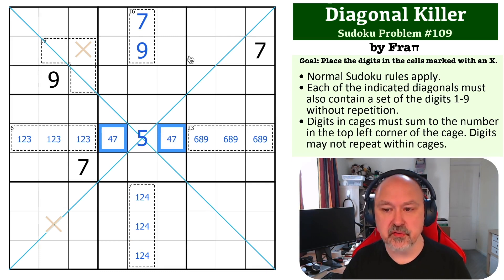Now, by Sudoku, 7 has to go in one of these two cells because it can't go in any of those, and it can't go here because of this. So, this is now a 7.